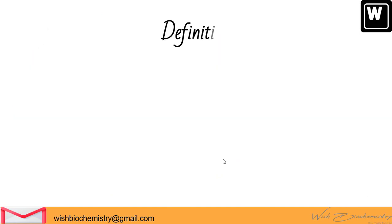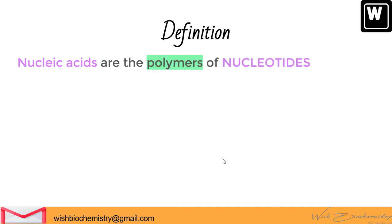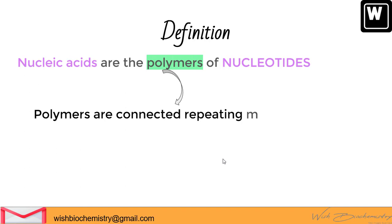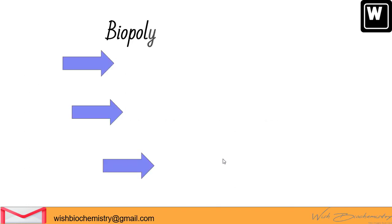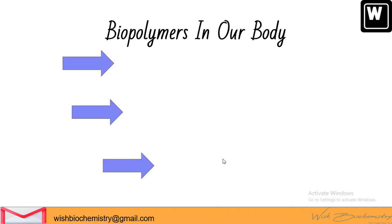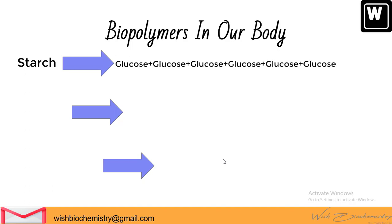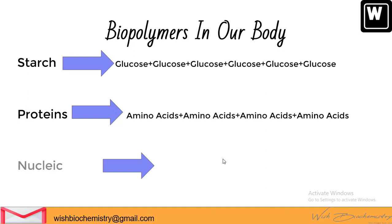Let's define Nucleic Acids. Nucleic Acids are polymers — biopolymers that can only be synthesized inside the body. Polymers are made up of connected repeating units called monomers, and in Nucleic Acids the monomer is the nucleotide. For example, starch is a polymer of glucose, proteins are polymers of amino acids, and Nucleic Acids are polymers of nucleotides.